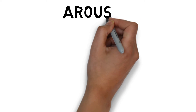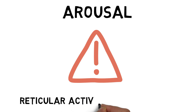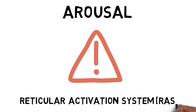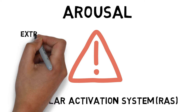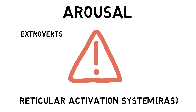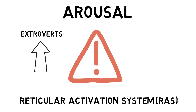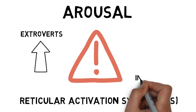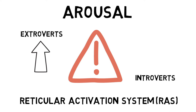Arousal is a state of alertness or readiness of an individual to perform a task, motivating them to behave in a particular way. Arousal is controlled and regulated by the reticular activation system, which is located in the central cortex of the brain. Extroverts have lower levels of intrinsic arousal compared to introverts. Therefore, extroverts will seek situations of high arousal, whereas introverts seek low arousal situations.